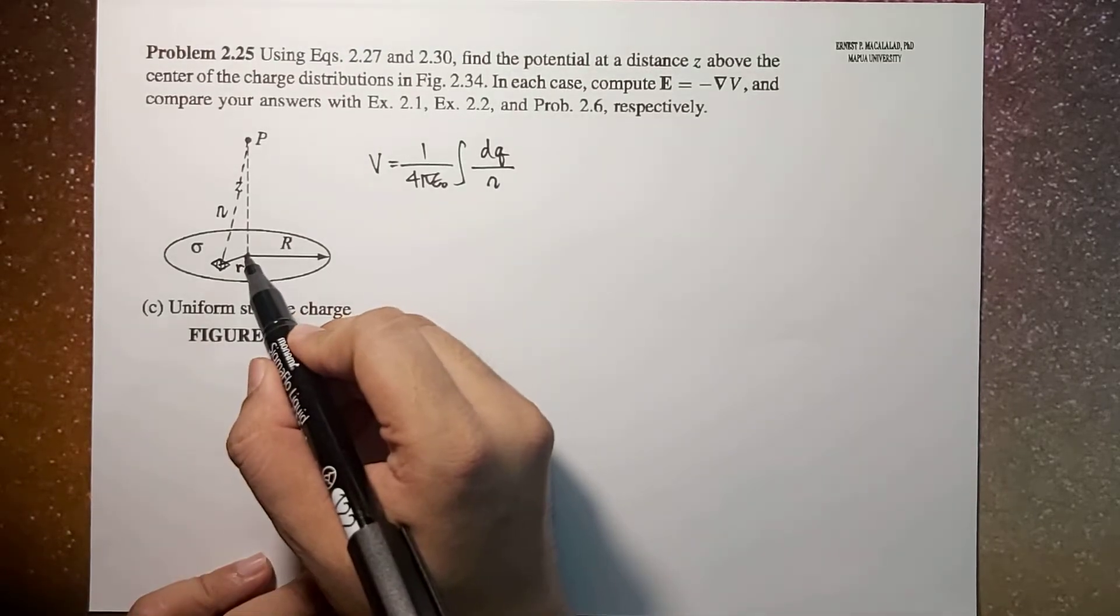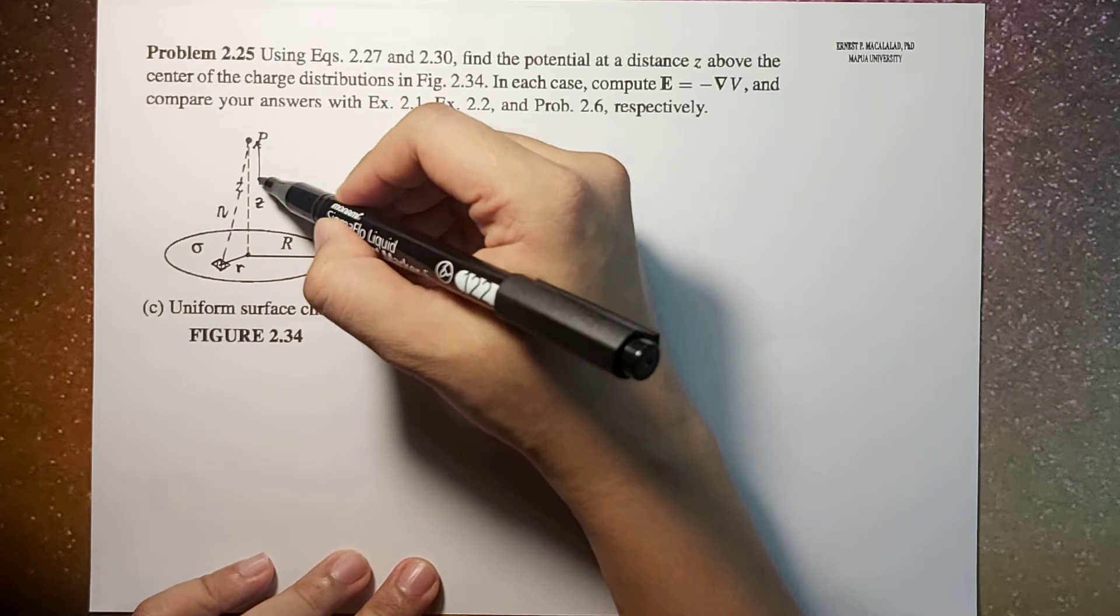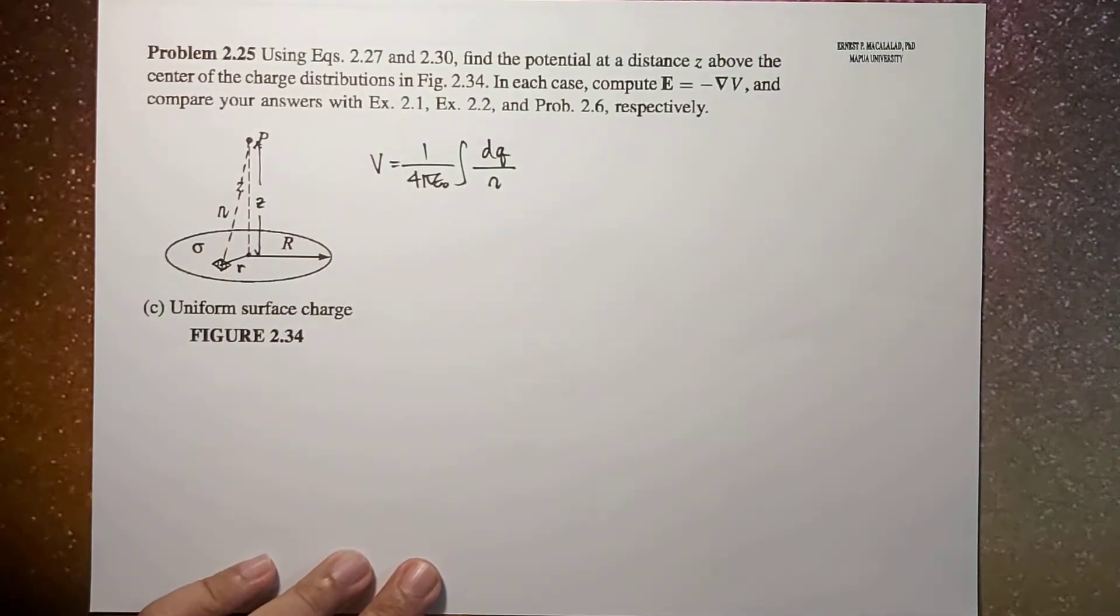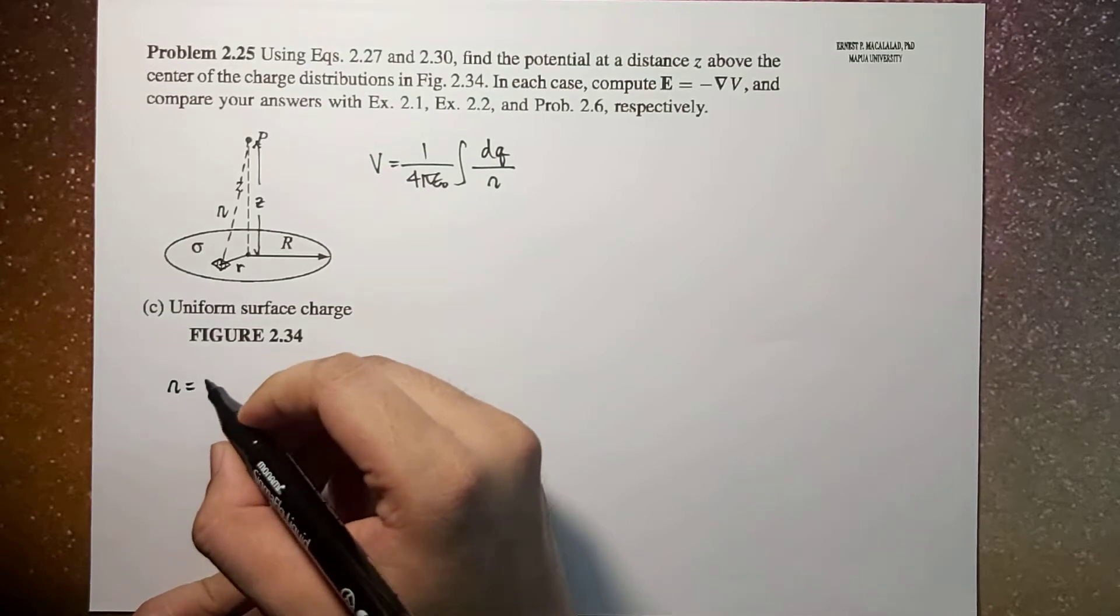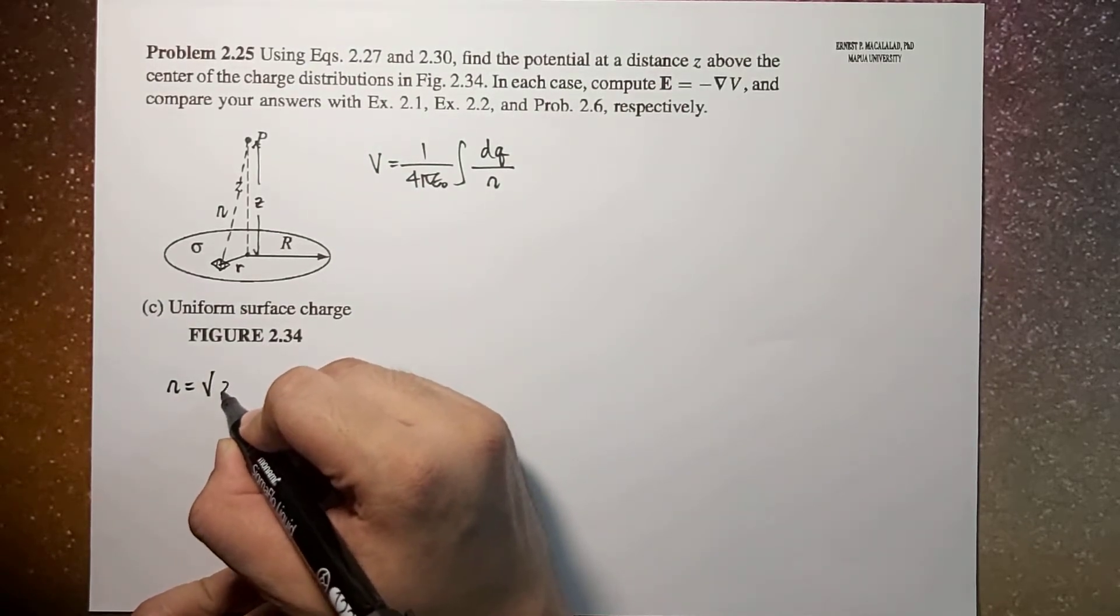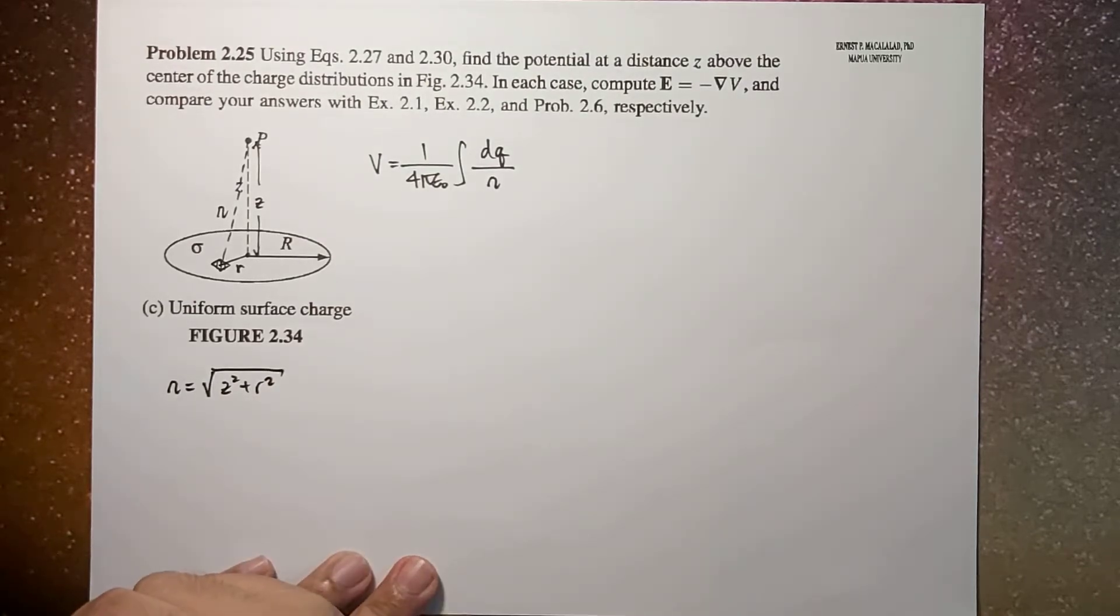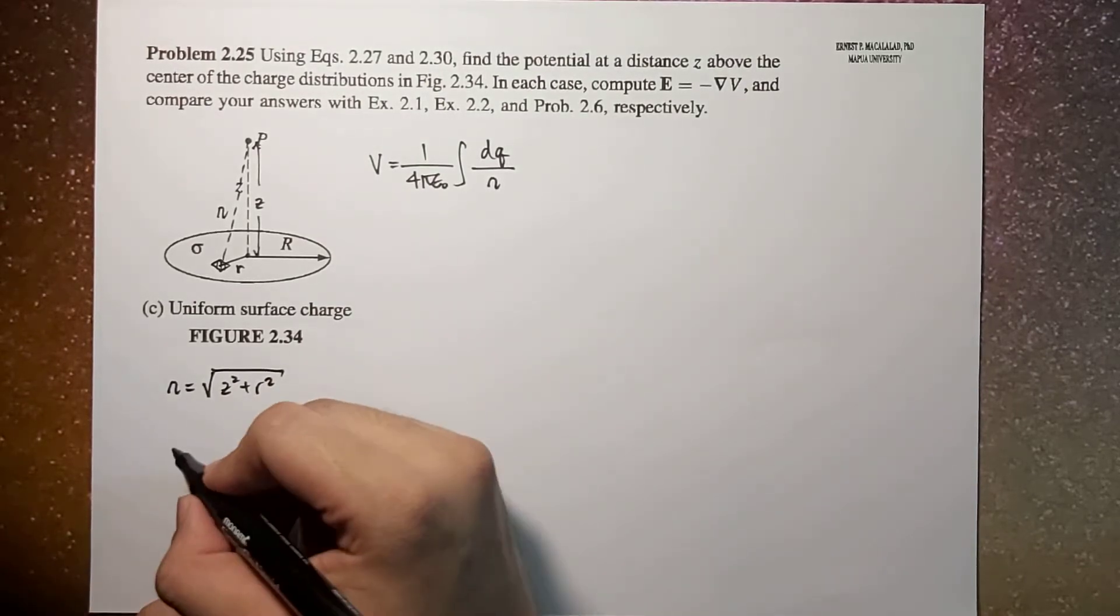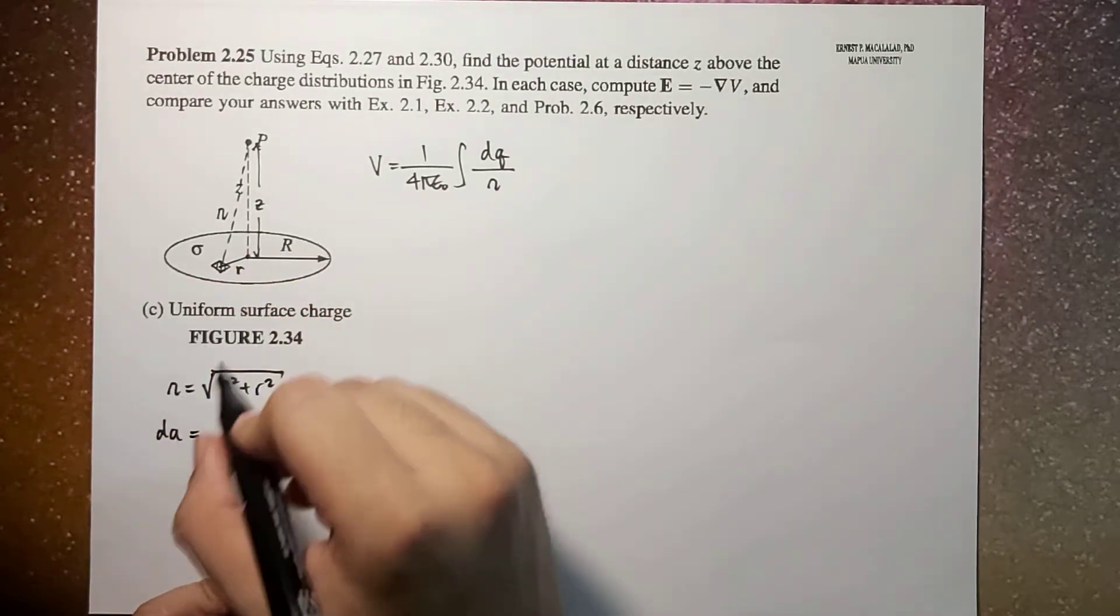Away from the center of the sphere, this is your z. So script r will be equal to square root of z squared plus r squared, and then dA in spherical coordinate system in this configuration.